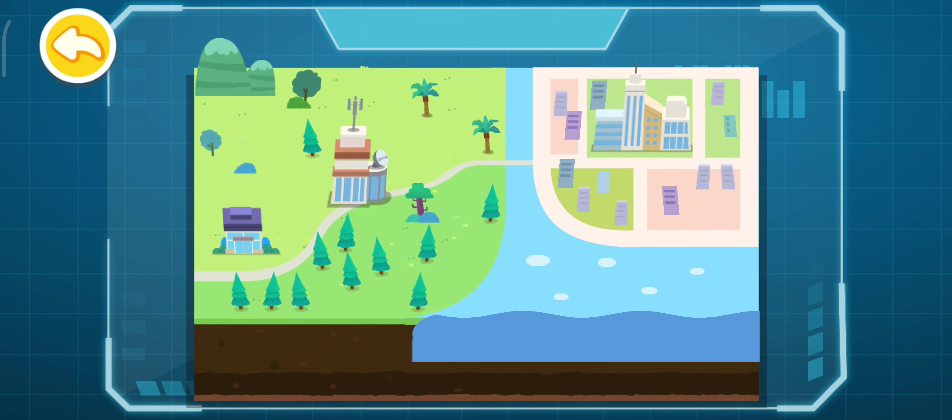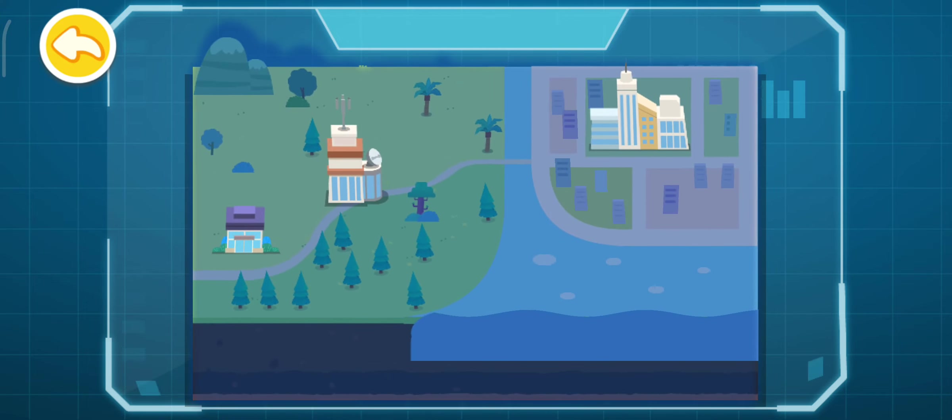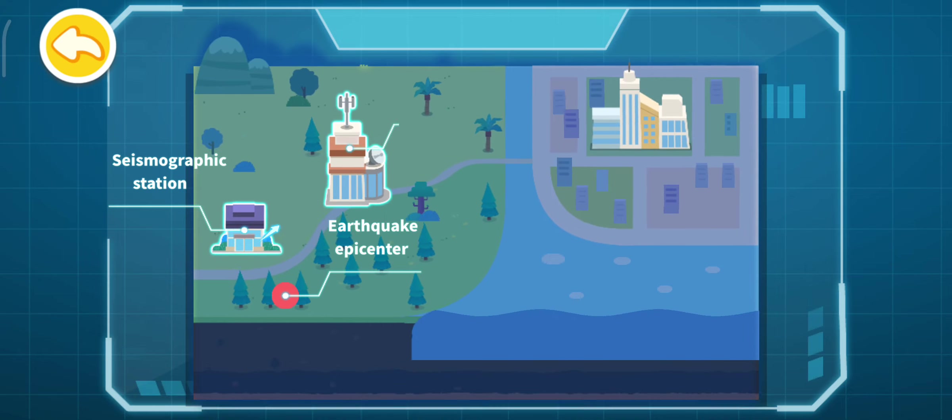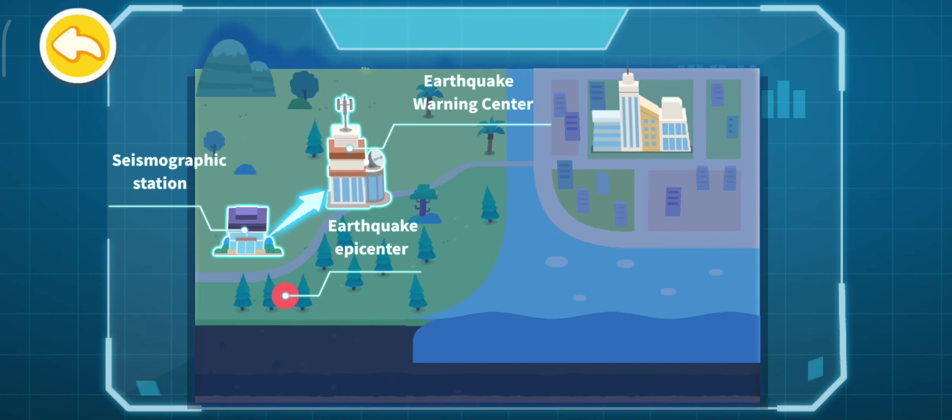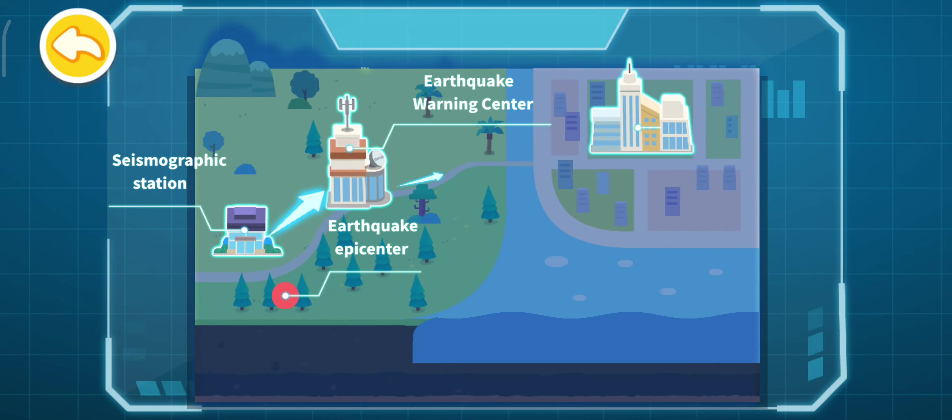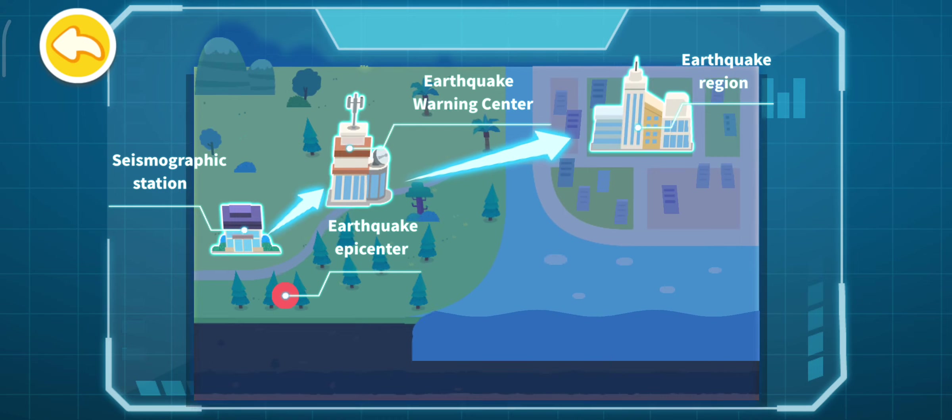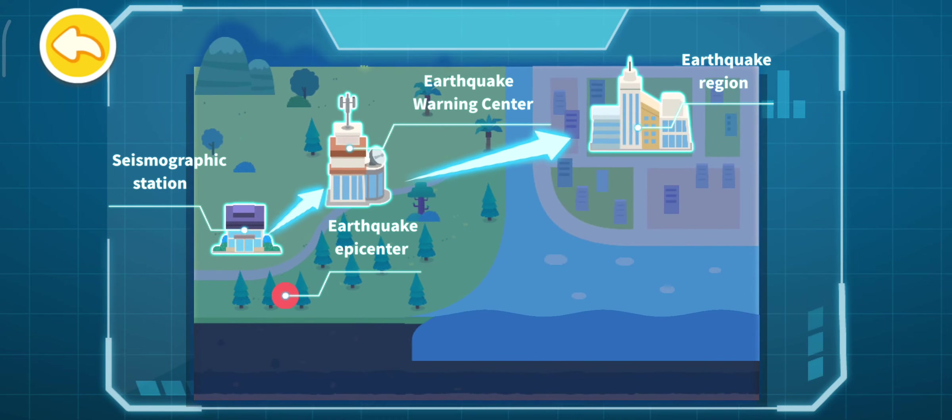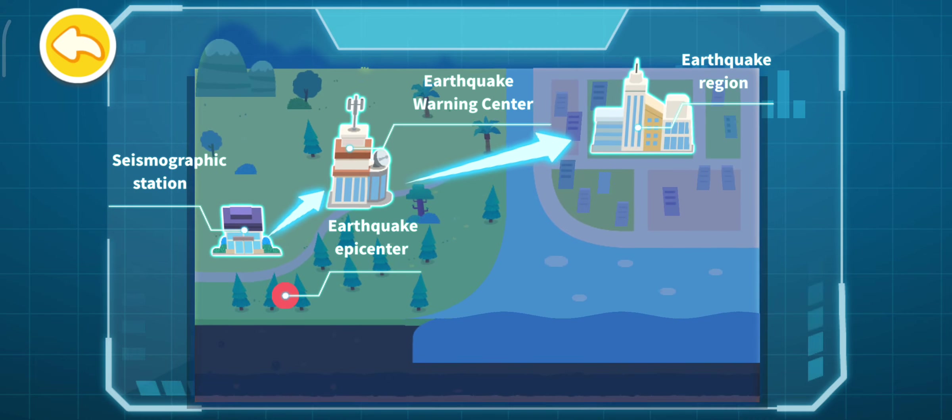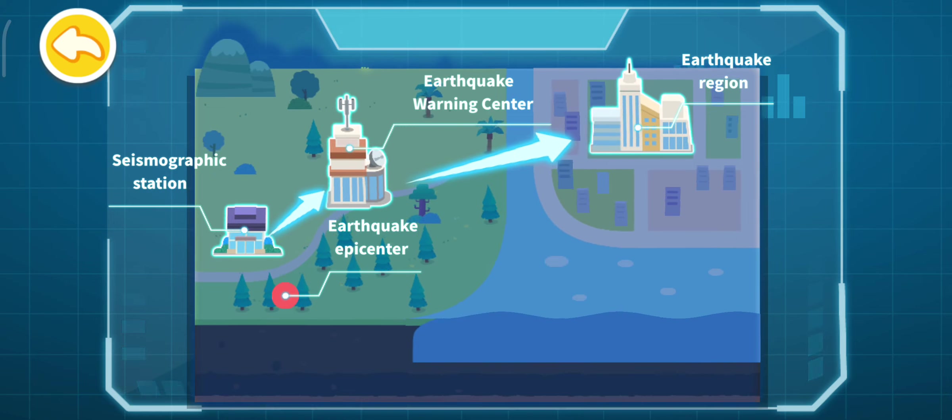What is the principle of earthquake warning? When the earthquake strikes, earthquake station near the epicenter captures the initial seismic wave information. Then, earthquake warning center immediately estimates seismic parameters and influence intensity, and sends an alert to the earthquake region before the destructive seismic waves arrive, so as to remind residents to take urgent measures and alleviate disaster losses.